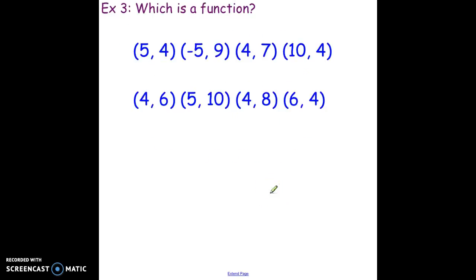Another way we can look at this is through ordered pairs. Remember, your ordered pairs are always in the form (x, y), so that's your input comma output. For this top line: I input 5 and get 4, I input -5 and get 9, I input 4 and get 7, I input 10 and get 4. The second line: I put in 4 and get 6, I put in 5 and get 10, I put in 4 and get 8, I put in 6 and get 4. One of these is a function, one is not. The second one is not a function.